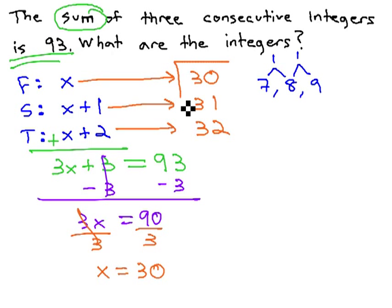We have three consecutive integers, 30, 31, and 32, which have a sum of 93.